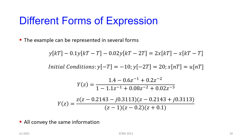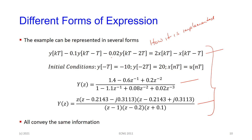The discrete time system — you could describe it by a difference equation, by a transfer function, or in terms of the poles and zeros. This is how it is implemented in reality. If you ever do discrete signal processing, you'll see how we actually do that — how you would put it into the FPGAs or the microprocessors.